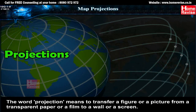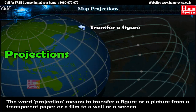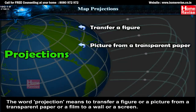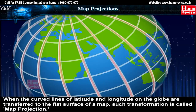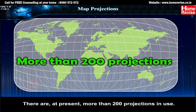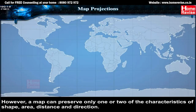Map projections: the word projection means to transfer a figure or a picture from a transparent paper or a film to a wall or a screen. When the curved lines of latitude and longitude on the globe are transferred to a flat surface of a map, such a transformation is called map projection. Map projections solve the problem involved in showing the spherical surface of the earth on the flat surface of a map. There are at present more than 200 projections in use.